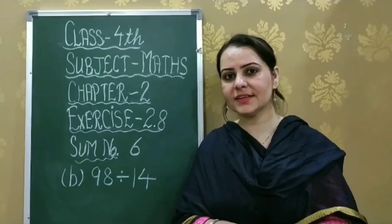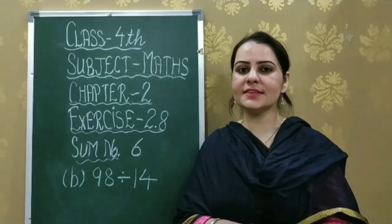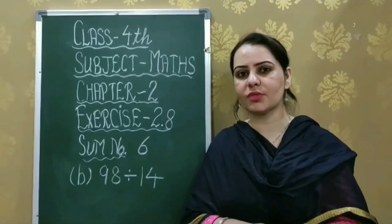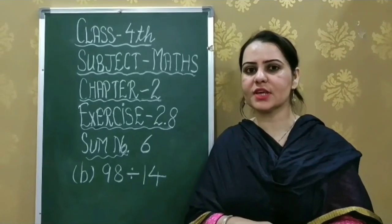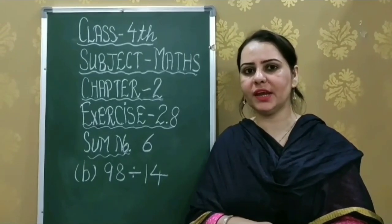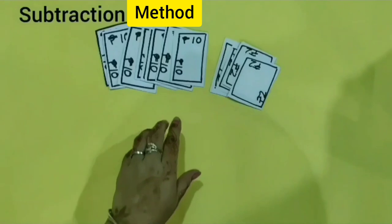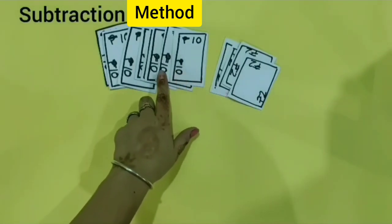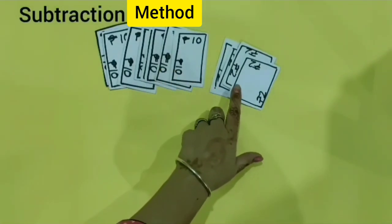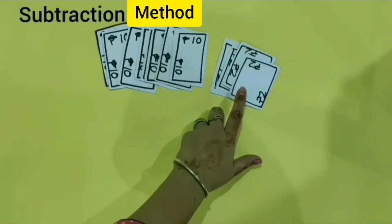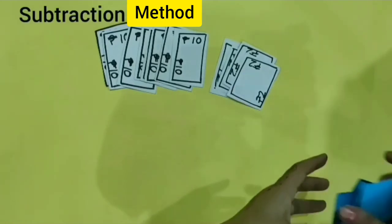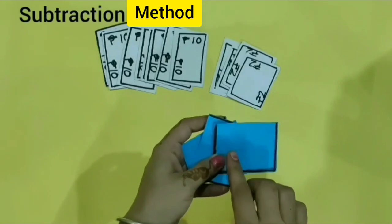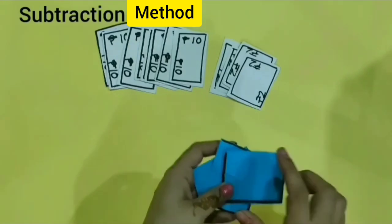Good morning students. Today we will solve B part of sum number 6 of exercise 2.8. I have 98 rupees. There are 9 notes of 10 rupee and 4 notes of 2 rupee. I have to put 14 rupees in each card. Let's see how many cards do I need.